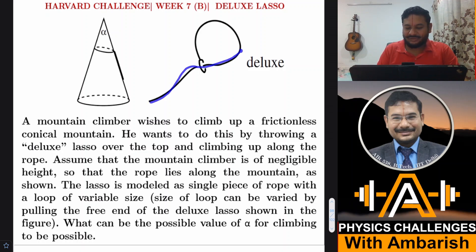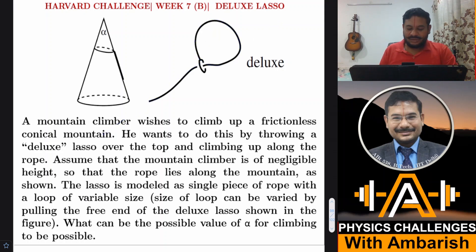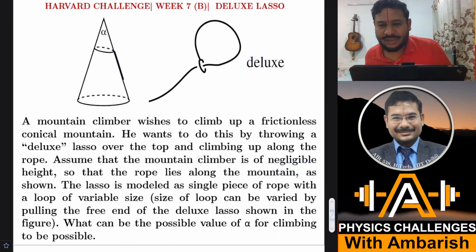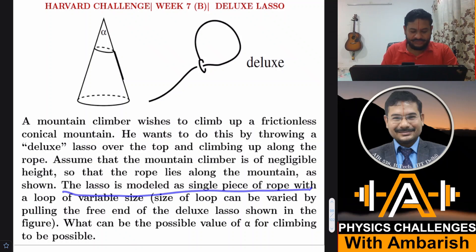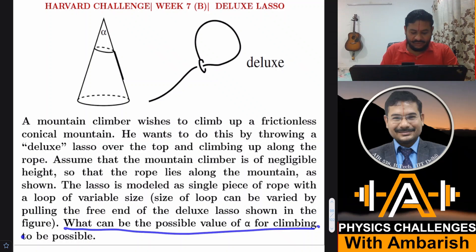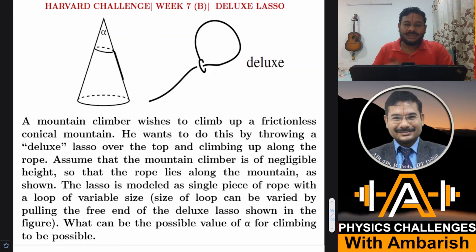The lasso is a single piece of rope with a small loop at the end. If you pull the rope, you can reduce the size of this loop. The mountain climber assumes negligible height so that the rope lies along the mountain as shown. The size of the loop can be varied by pulling the free end of the deluxe lasso. We have to find the possible values of alpha for climbing to be possible.